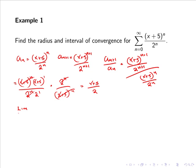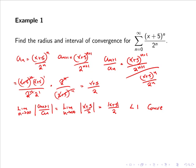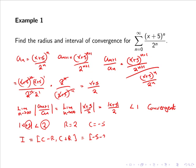So the limit as n goes to infinity of the absolute value of a_{n+1} over a_n equals the absolute value of x plus 5 divided by 2. For this to be convergent we need it to be less than 1, so we have the absolute value of x plus 5 is less than 2. That means r equals 2 and c equals minus 5. The interval of convergence i is given by c minus r to c plus r, which is minus 5 minus 2 to minus 5 plus 2, simply minus 7 to minus 3.